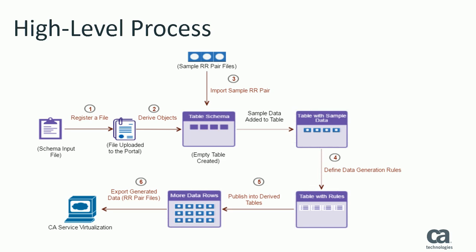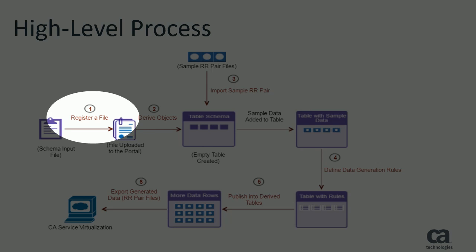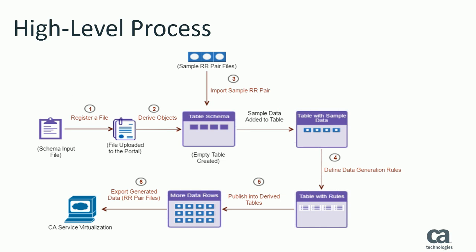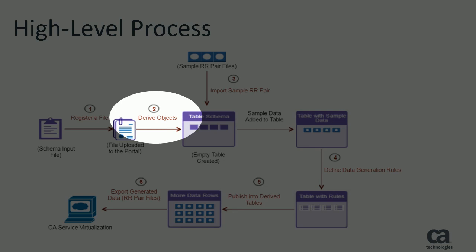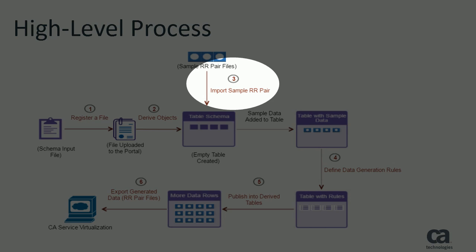The first step in this process is to register the WSDL file object. The second step is to create and register derived tables based on the registered WSDL file object. In the third step, you use the associated XMLRR pair files to import the sample data into the empty tables.